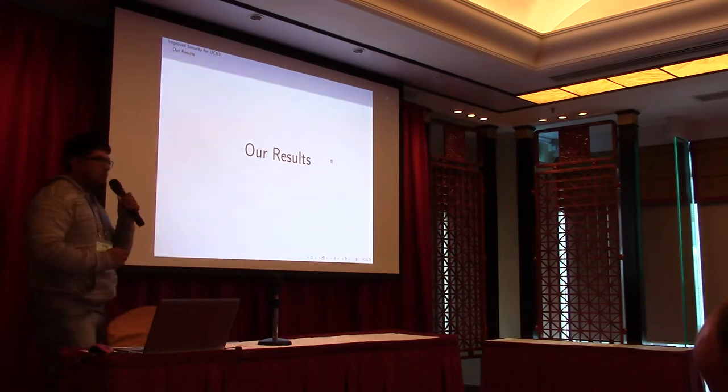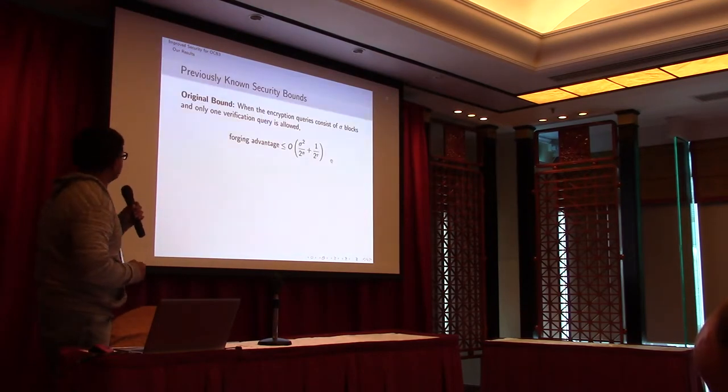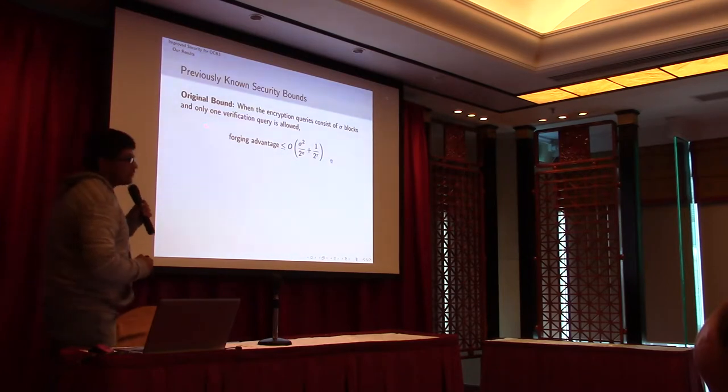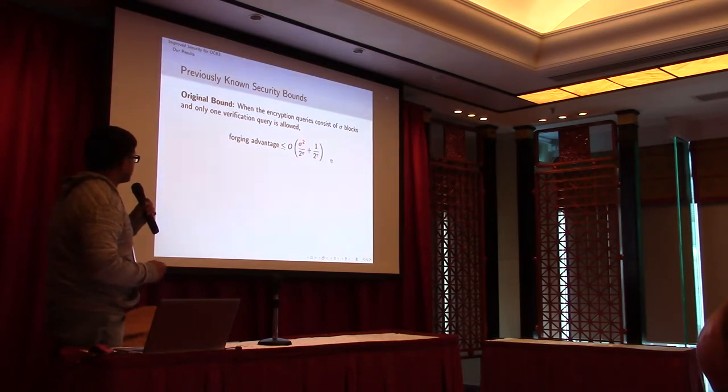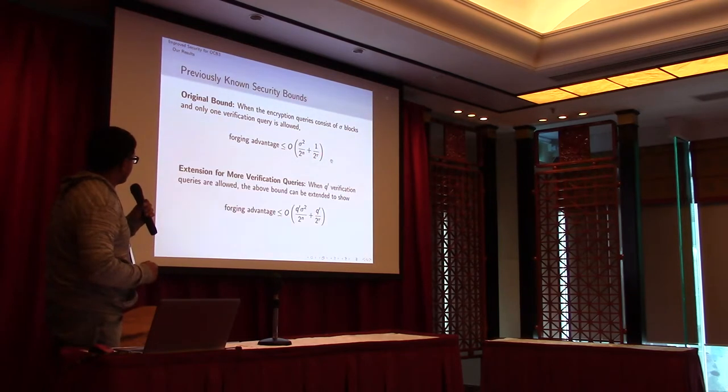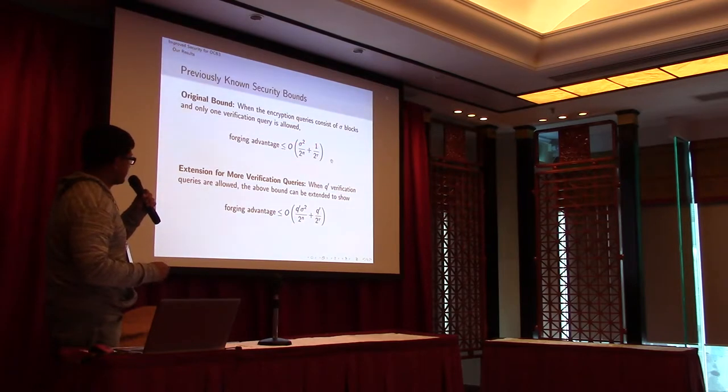So now we come to the main slides of this talk. What do we know about the security bounds? This was the original security bound. When the encryption queries consist of sigma blocks and only one verification query is allowed, the forging advantage is order of sigma squared by 2^n plus 1 over 2^tau, where tau is the length of the tag. If we have more verification queries, the straightforward extension is if we have q_prime verification queries, multiply this by q_prime. So we get this bound.